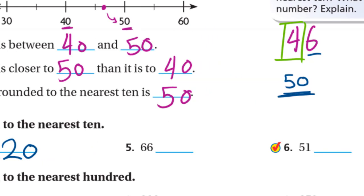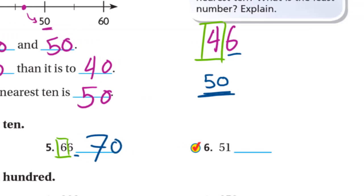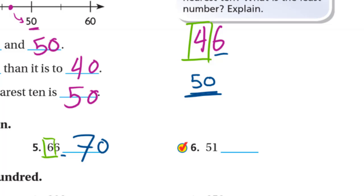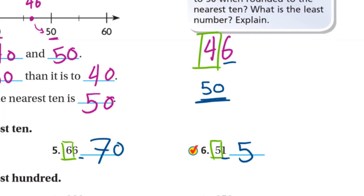Round 66 to the nearest 10: the tens digit is 6, and to the right is 6, which is a strong digit, so it rounds to 70. Round 51 to the nearest 10: the tens digit is 5, and to the right is 1, which is a weak digit, so it stays at 50.